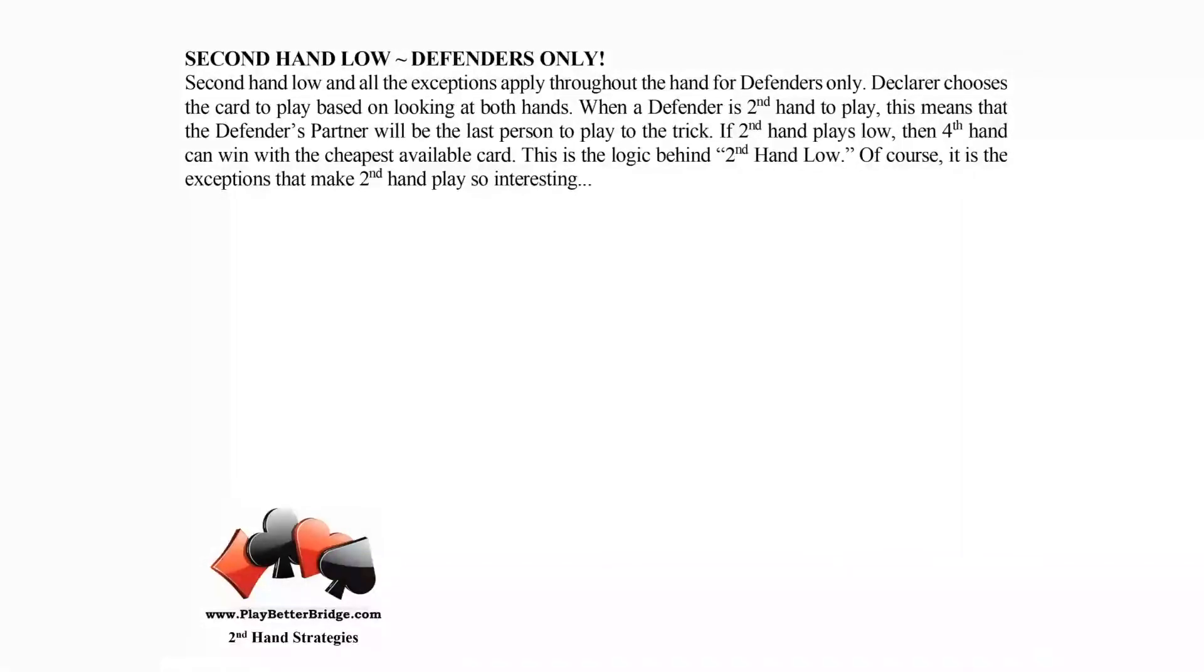Why do we have that rule? Well, let's say declarer leads the diamond two and you're sitting as second hand. You have the ace, ten, and eight, and the dummy has the queen, nine, and four. Declarer leads the two of diamonds and you're second hand—second hand means second hand low.